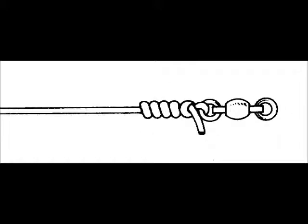Next, hold the tag end and standing line while the coils are pulled up. Take care that the coils are in a spiral, not lapping over each other. Then slide it tight against the eye and clip the tag end. That concludes how to tie an improved clinch knot. Thank you.